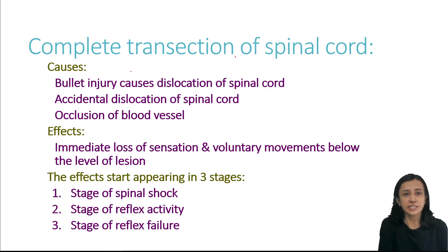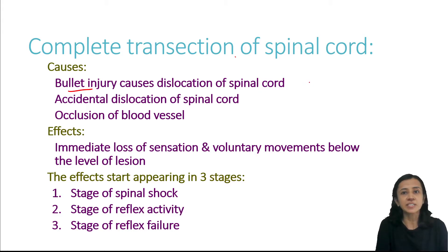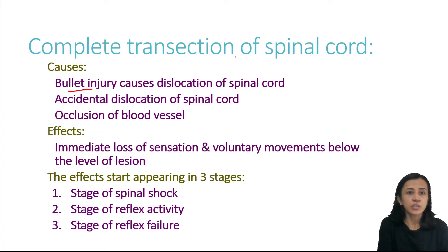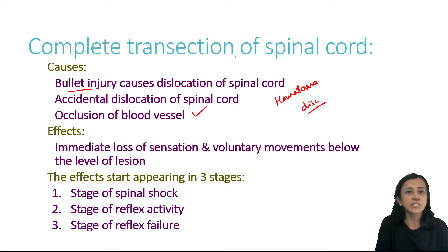What are the causes of complete transection? It may be because of bullet injury that causes dislocation of the spinal cord, where the spinal cord is dislocated and completely transected. Accidental dislocation may also be a cause. Compression by bone fragments, hematoma, disc prolapse, or disc material are other causes. Occlusion of a blood vessel also results in transection of the spinal cord.